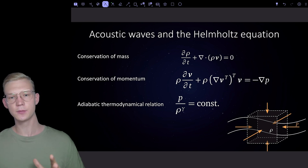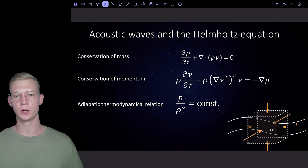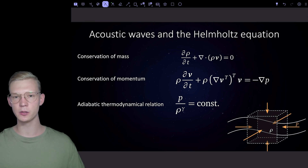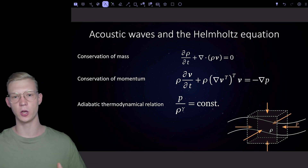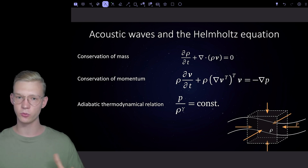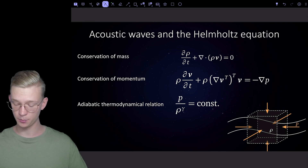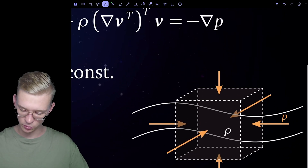In the last videos we talked about the Lagrangian approach, where we specifically look at particles and their accelerations and velocities. When we're talking about a fluid, we have so many particles that interact with each other that we can't do that anymore. So we employ another approach: the Eulerian approach.